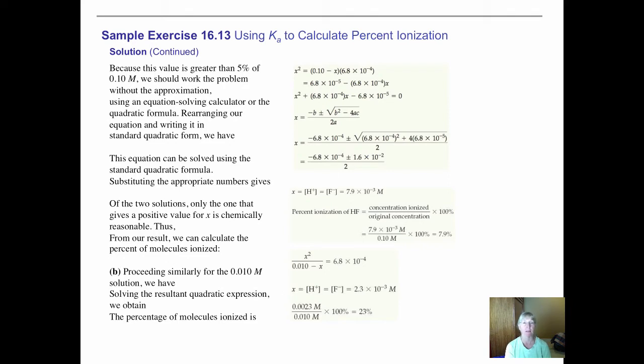The good news is the AP exam is no longer going to have quadratic equation type problems, but I want to show this to you anyways. This time, what you would see is an expression that shows the X not being ignored. We've rearranged the equation for X² equals the original concentration minus X times that Ka. That number, 10⁻⁴, is your hint that that's a fairly large Ka and therefore the X should not be ignored. We do some math to rearrange that expression and get it into the form of the quadratic equation.